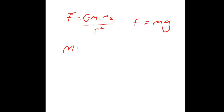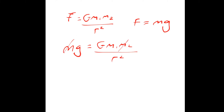So what we can write is mg is equal to G·m1·m2 over r squared. The masses cancel, and what we're left with is gravitational field strength g equals GM over r squared.